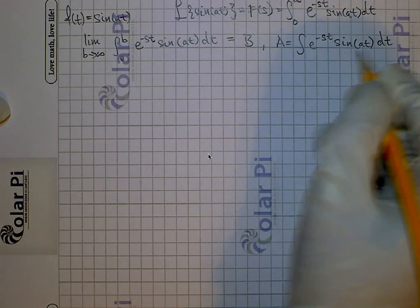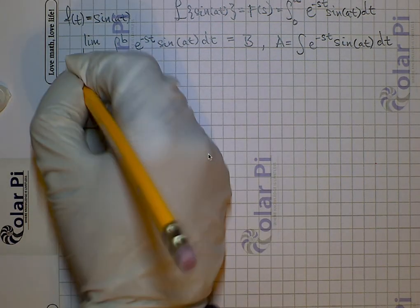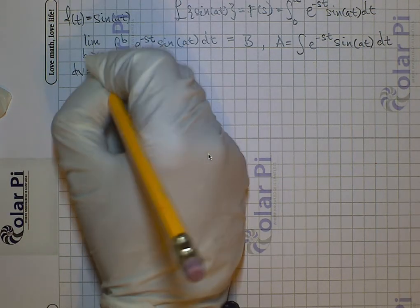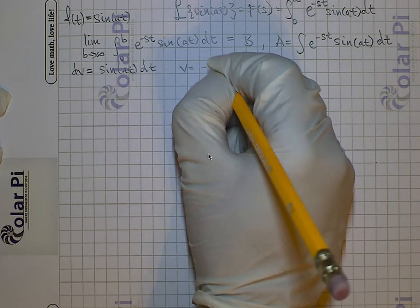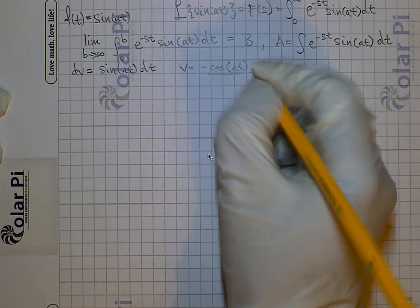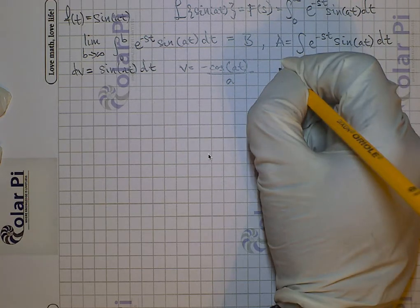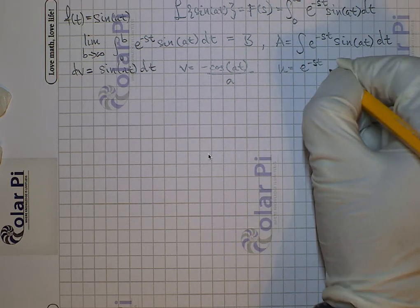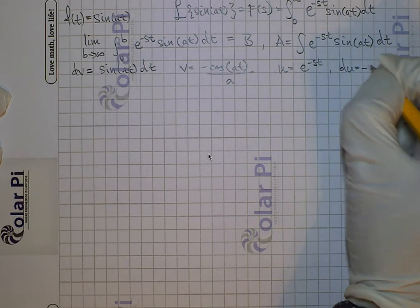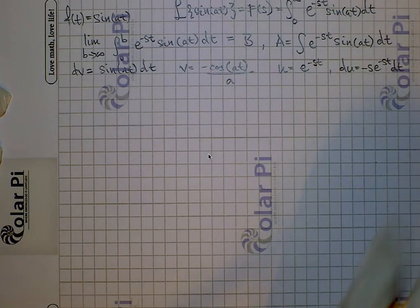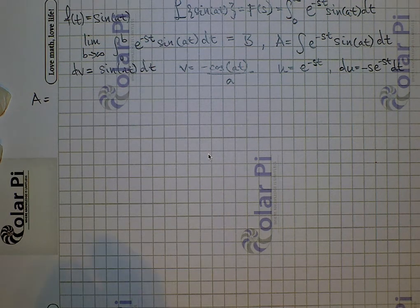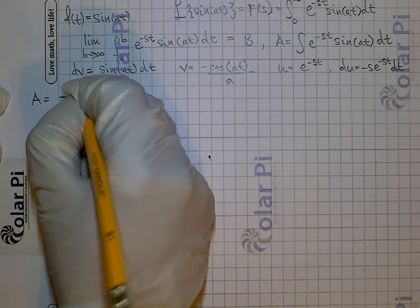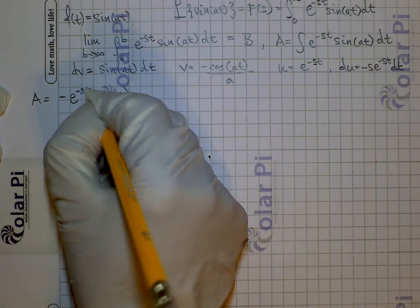This integral is just an exercise in integration by parts. We'll say that dv is equal to sine of at times dt, so v will have to equal negative cosine of at divided by a. Then we'll say that u is equal to e to the negative st, so that du is equal to negative s e to the negative st times dt. So we can write that capital A is equal to uv, so negative e to the negative st times cosine of at all divided by a.